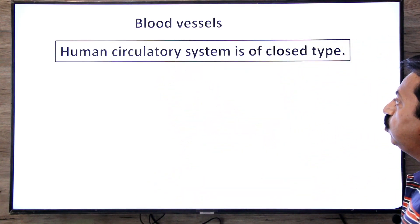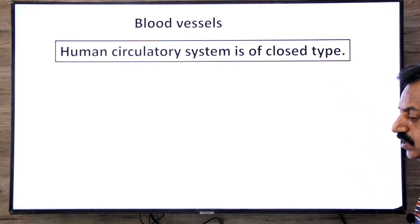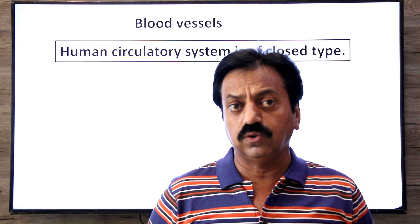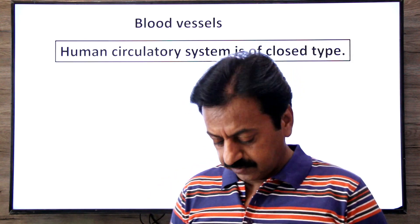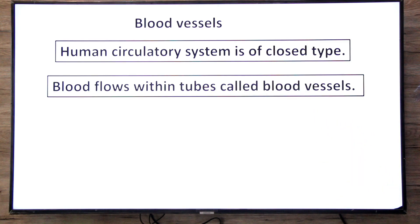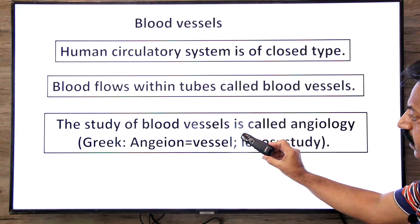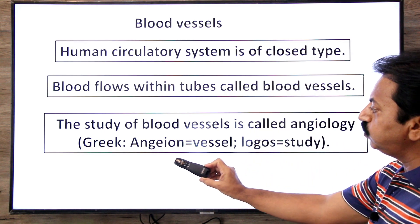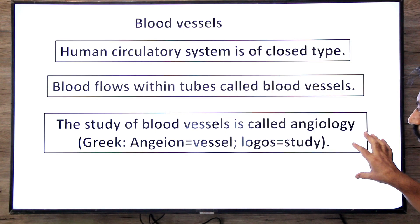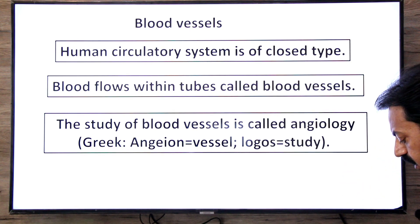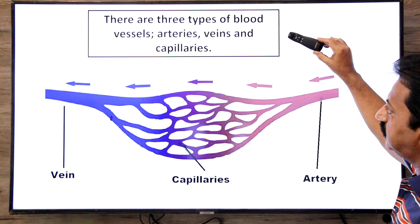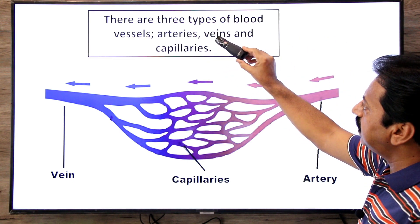First point: the human circulatory system is a closed type circulatory system. Second point: blood flows within tubes called blood vessels. The study of blood vessels is called angiology — it comes from two Greek words: 'angione' meaning vessels and 'logos' meaning study. There are three types of blood vessels: arteries, veins, and capillaries.